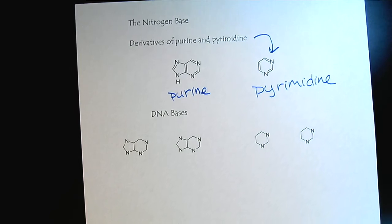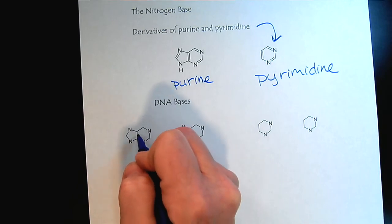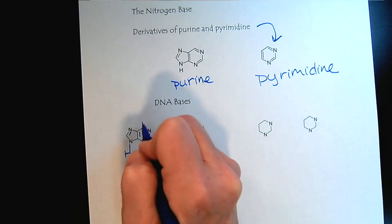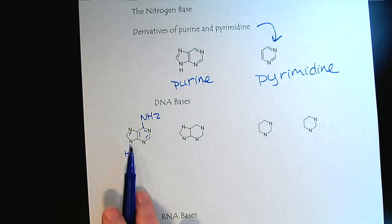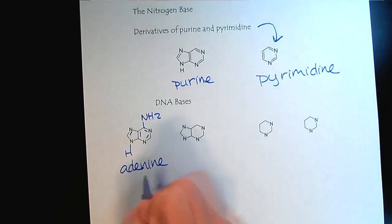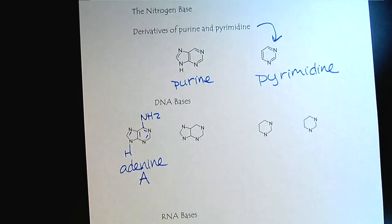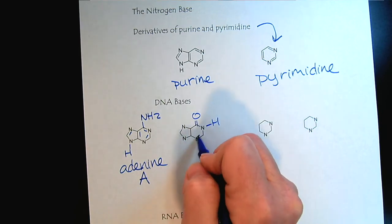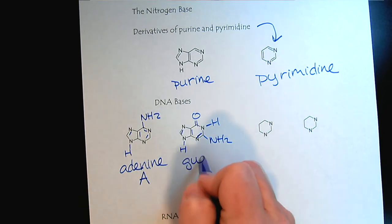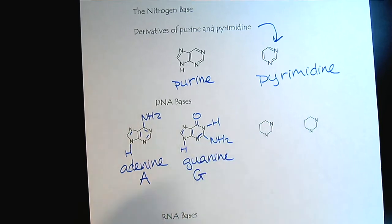First we'll look at the DNA bases. This first purine derivative is adenine, symbolized with an A. The second purine has the amide, and we see some more amines coming off. This is guanine, and we symbolize that with a G.